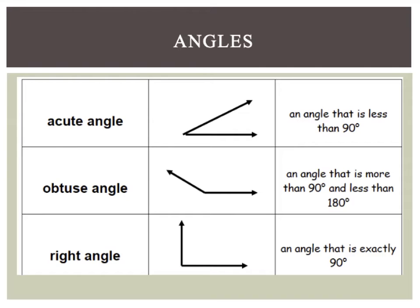Next, we're going to talk about angles. We have three types of angles, and these angles help us when we're identifying triangles. We have an acute angle, which is an angle that is less than 90 degrees.